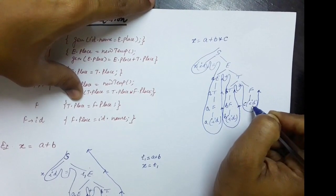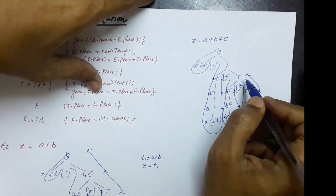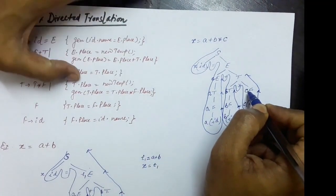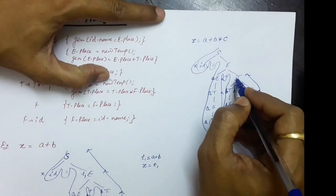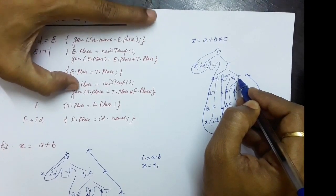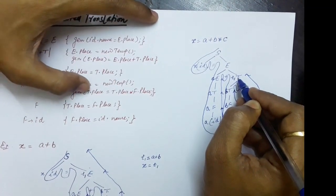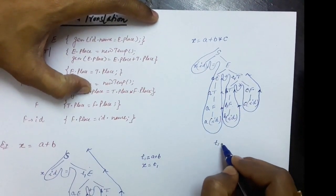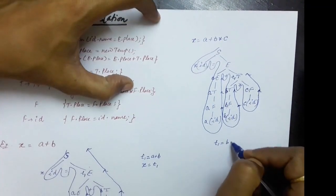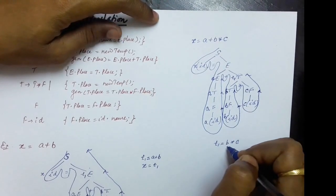This is a reduction with the rule T produces T star F. First, T dot place equals newtemp — a new temporary variable is created, say t1, assigned as the attribute of T. Then we generate the three address code: T dot place equals T dot place multiplied with F dot place, which gives t1 equals b multiplied with c. So the first three address code statement generated is t1 equals b times c.